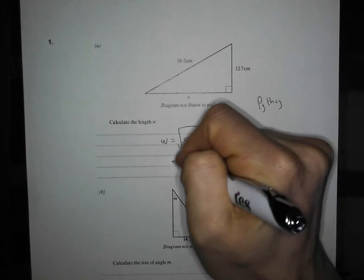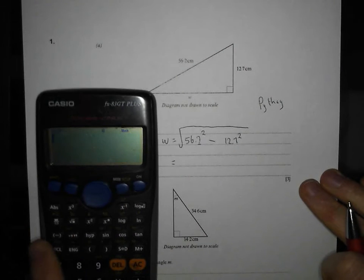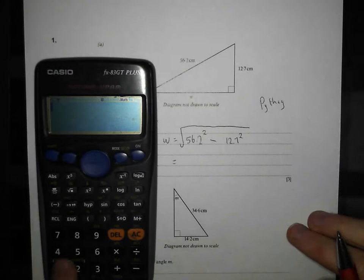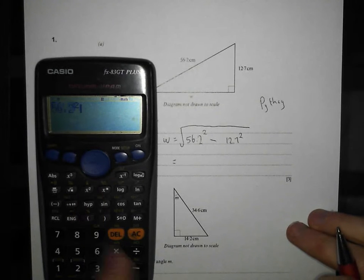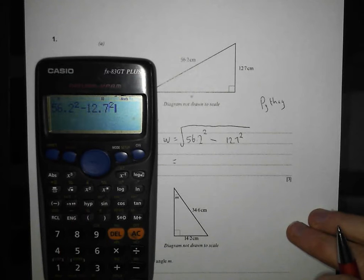And then as long as you can type into your calculator, you're laughing. Now, I'm going to do it step by step, but you can do it all in one. So I'm going to do 56.2 squared, take away 12.7 squared, press equals.